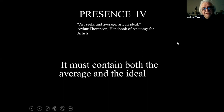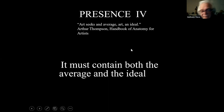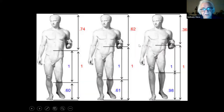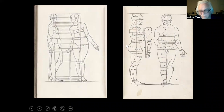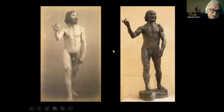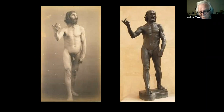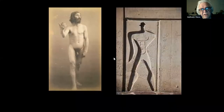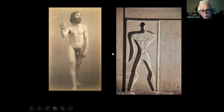It must contain both the average and the ideal. Arthur Thomson wrote an incredible handbook of anatomy for artists, and he said: science seeks an average, art seeks an ideal. Anatomy is on the more scientific end. Photography is always of the average — this is Rodin's St. John. You can see how sculptors are now copying from photographs. The Rodin is nothing you would venerate in any way. And of course the Corbusier proportions come into play.